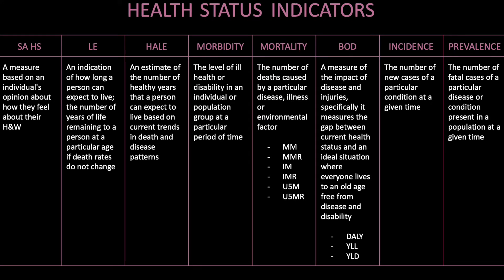Health status indicators. Self-assessed health status is a measure based on an individual's opinion about how they feel about their health and well-being. Life expectancy is an indication of how long a person can expect to live — the number of years of life remaining to a person at a particular age if death rates do not change. HALE is an estimate of the number of healthy years a person can expect to live based on current trends in death and disease patterns.